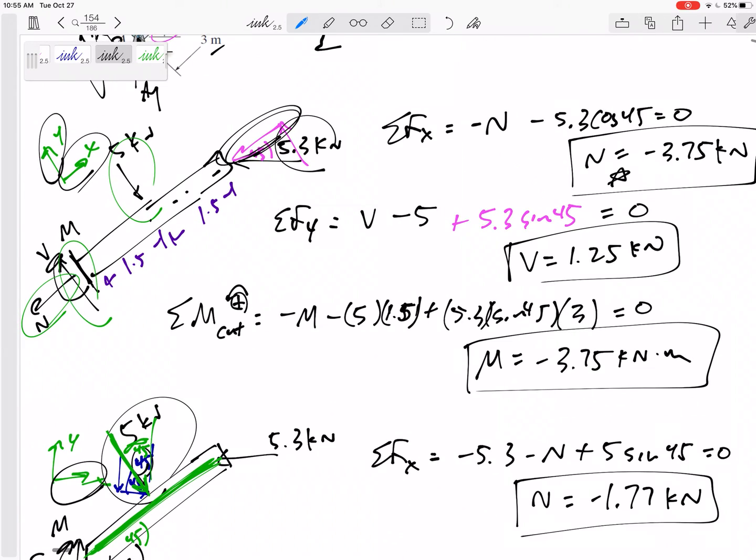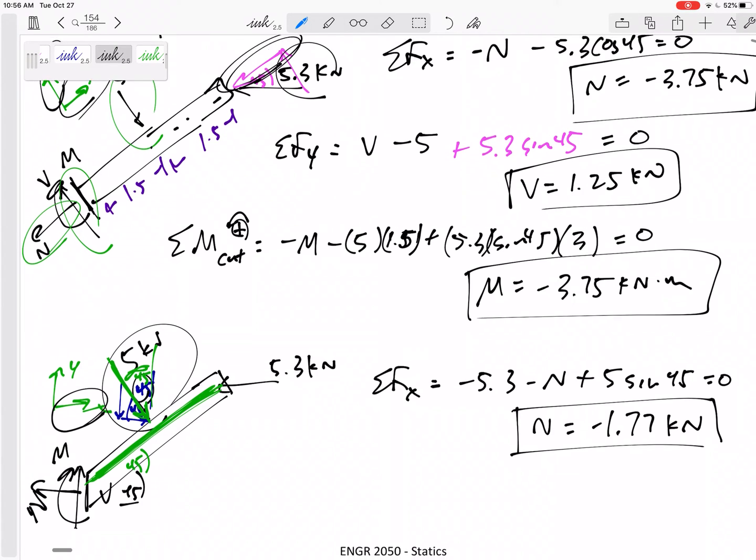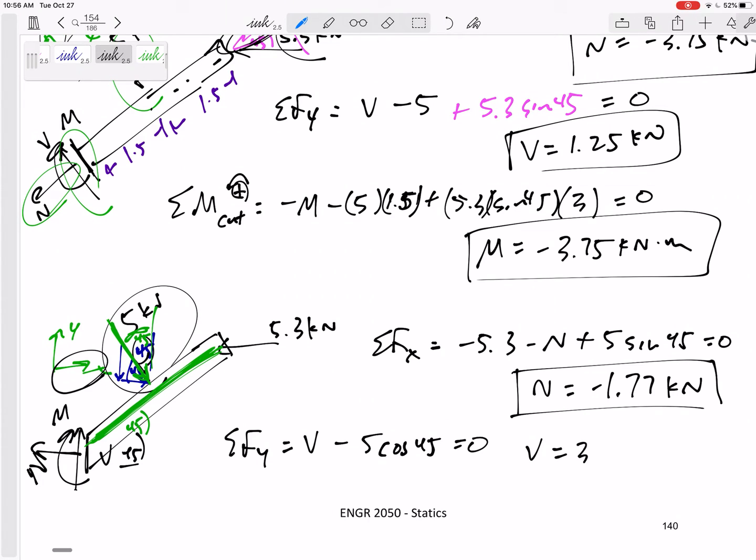Set that equal to 0 and then I've got my N is negative 1.77 kilonewtons leave it negative boxed in. Is it different? Yeah it is different. So it matters how you cut your beam. It matters what it's feeling along this cut versus what it's feeling along the other cut.